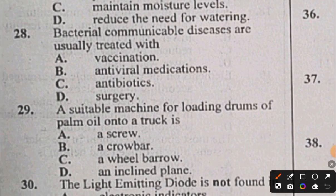Question 28: Bacterial communicable diseases are usually treated with: A) vaccination, B) antiviral medications, C) antibiotics, D) surgery. The answer to question 28 is C, antibiotics. Question 29: A suitable machine for loading drums of palm oil onto a truck is: A) a screw, B) a crowbar, C) a wheel barrow, D) an inclined plane. The answer to question 29 is D, an inclined plane.